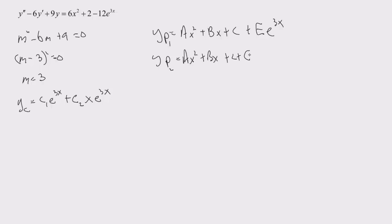So that's our first attempt to fix it, right? However, what do we notice? That x e to the 3x is still an element of the complementary. So we're going to multiply again. Third time's the charm here.